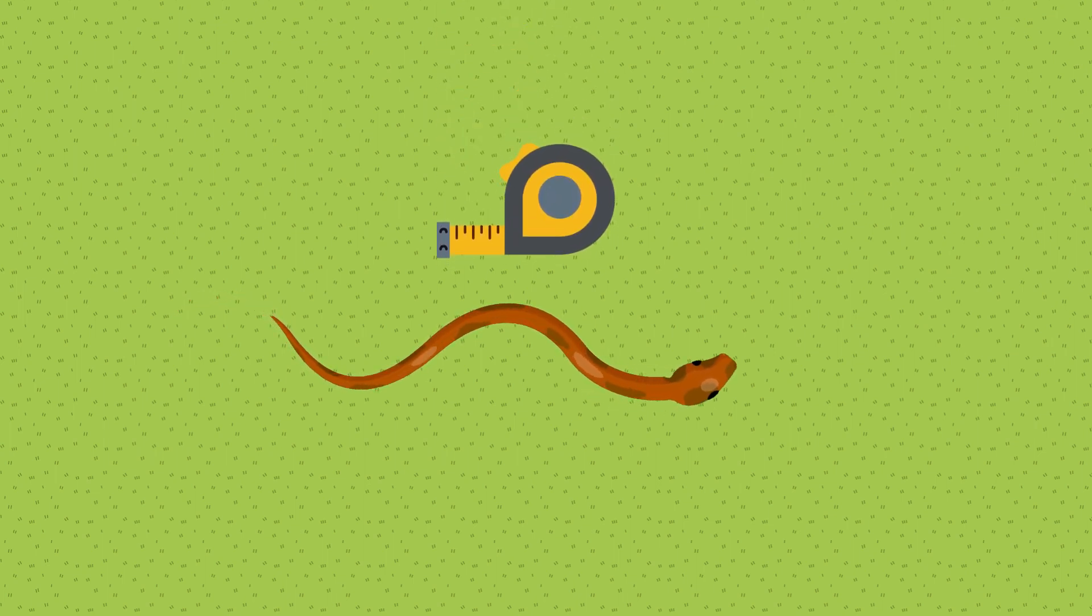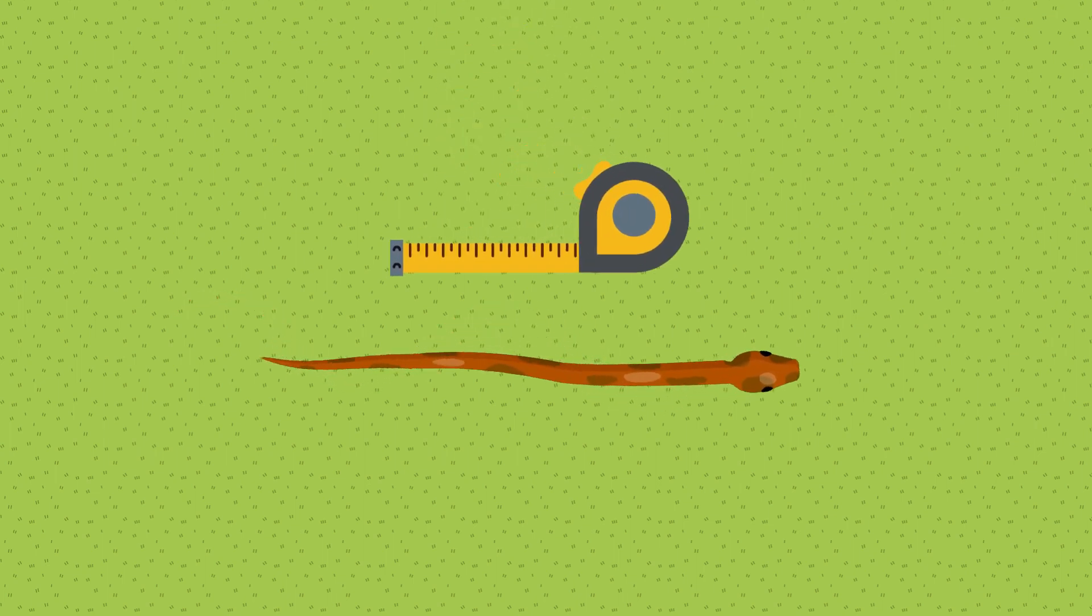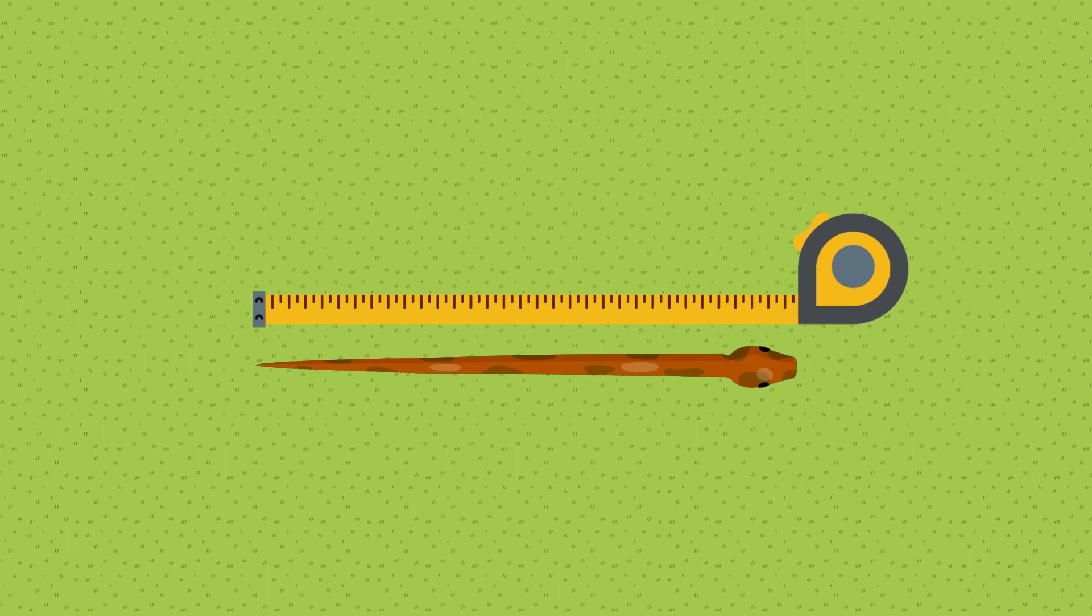Joaquin uses a tape measure as his measurement tool. He lines up the very end of each snake's tail with the hash mark at zero on the tape measure.